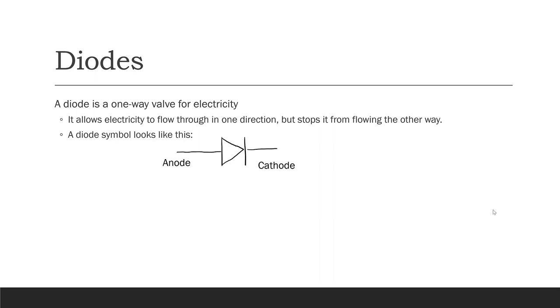A diode has two ends. One end is called the anode, and the other end is called the cathode. A real diode looks like this. You can see that there is a stripe painted on the actual diode, and that stripe is on the same side as the vertical line on the diode symbol.